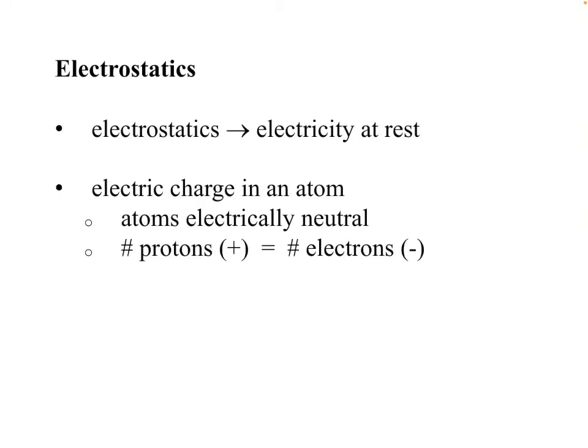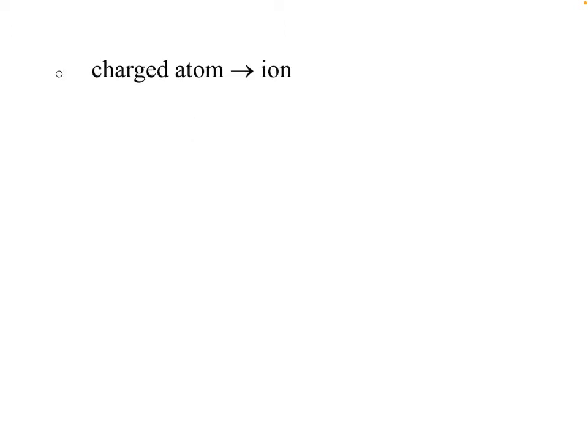We're going to go on to electrostatics. 'Electro' means electricity, 'statics' means not moving, so it's all about electricity at rest. If there is an electric charge in an atom, we know atoms are usually neutral because there's an equal number of protons and electrons. How do things become charged? If those electrons are free to move from atom to atom, they create ions — atoms that either have too few or too many electrons, becoming positively or negatively charged.